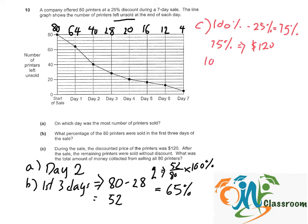So the actual price of the printer without discount would be 100%. So 100 over 75 times $120, we have $160.